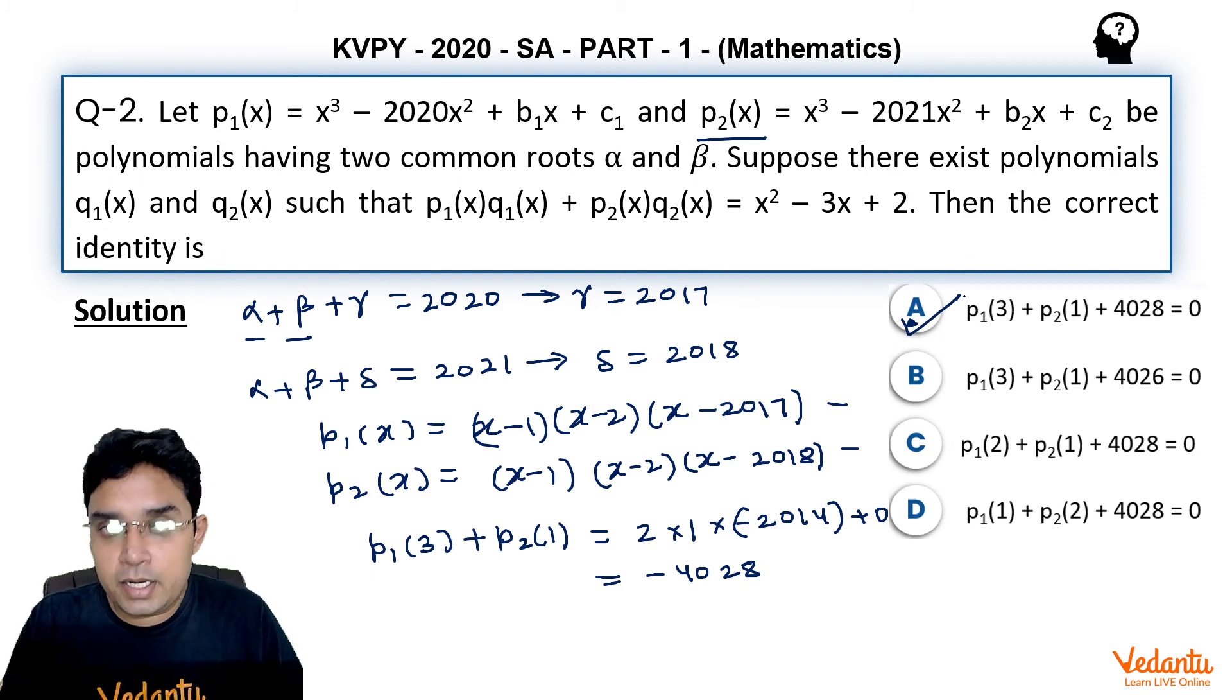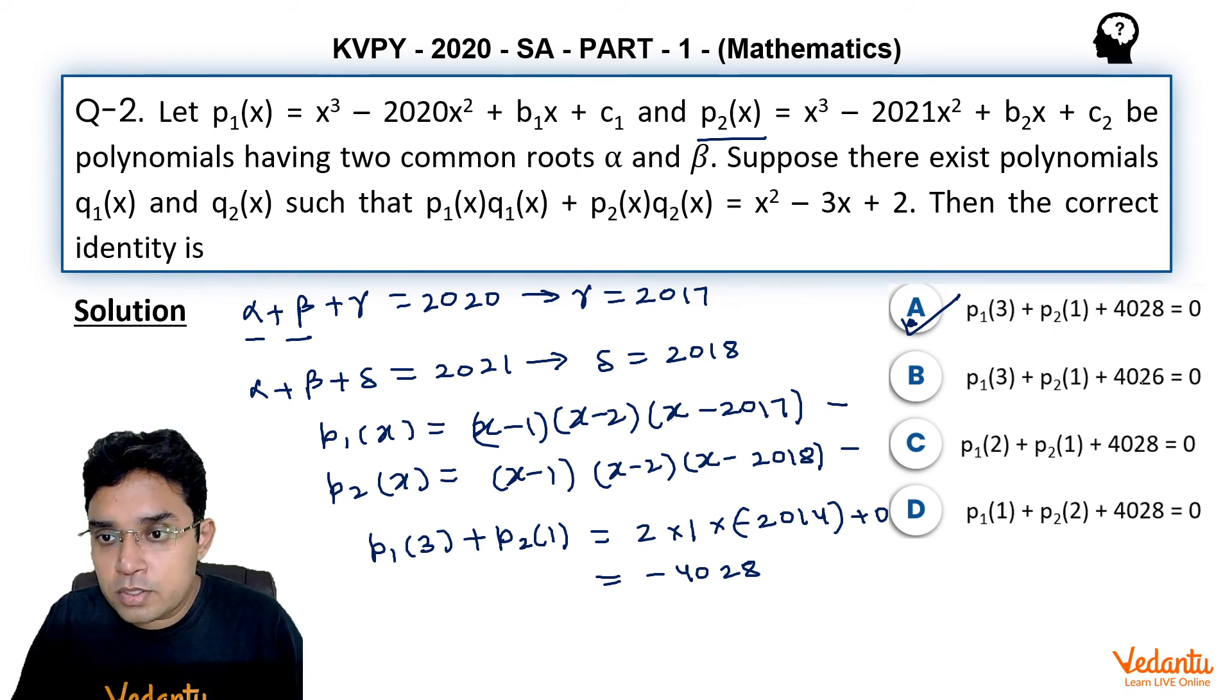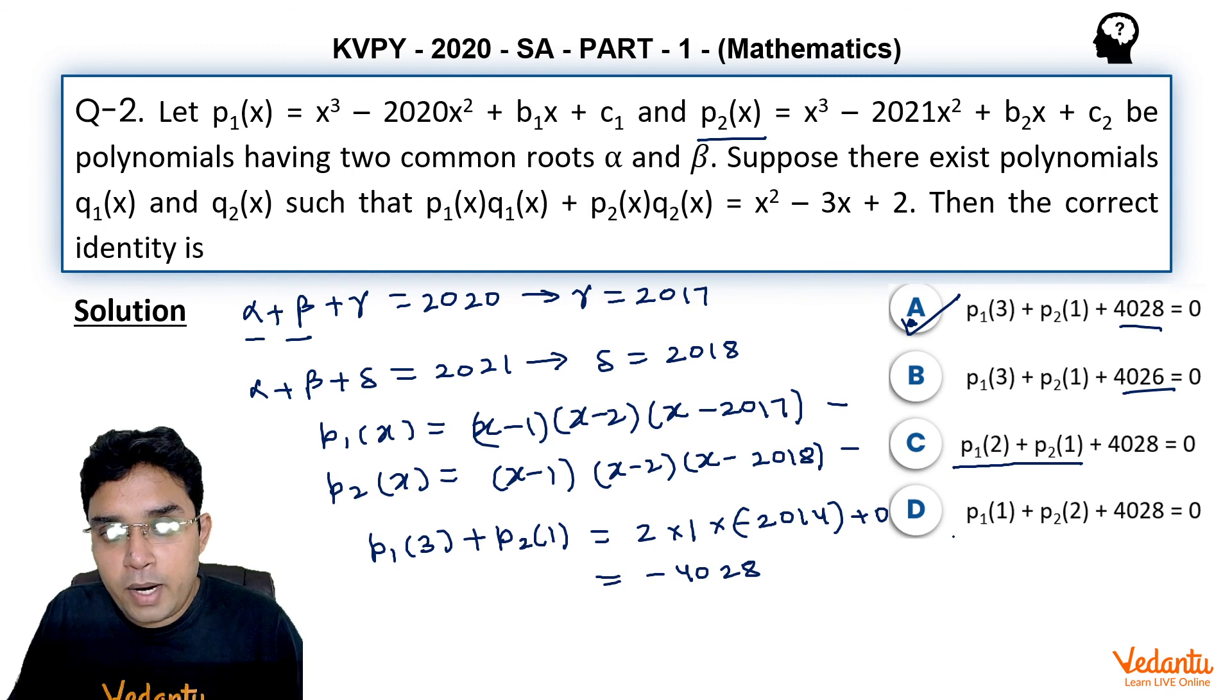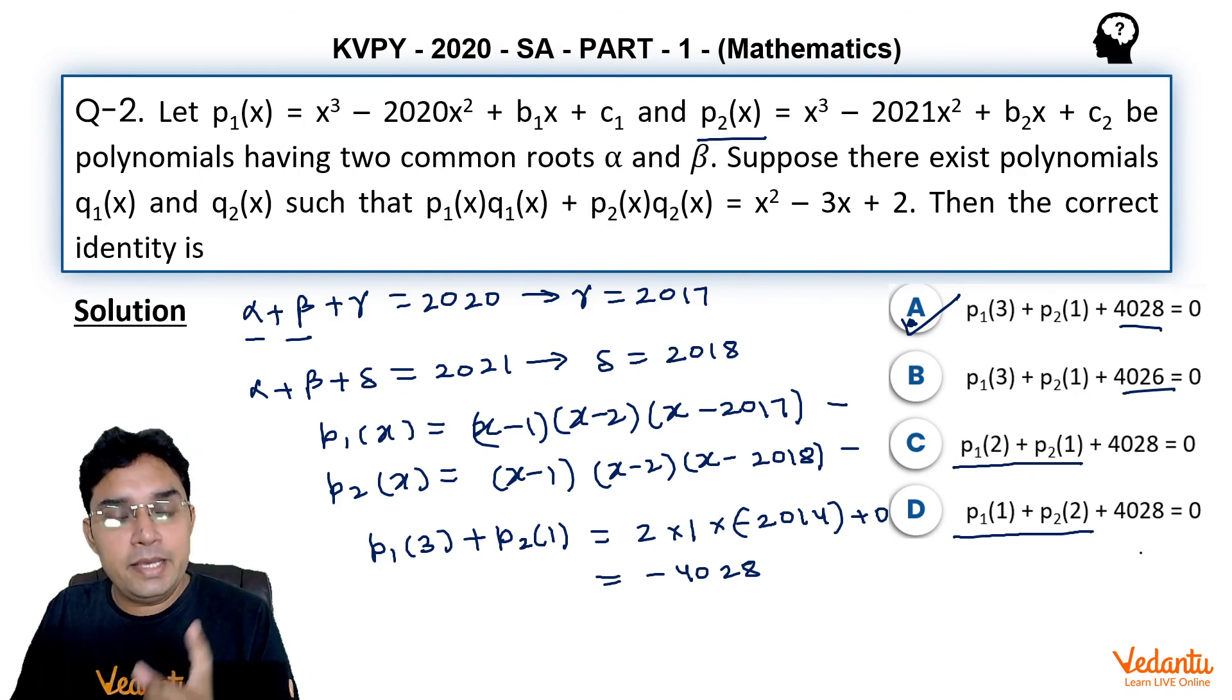As they are all single correct questions, so A should be the answer, but still we can check for B, C, D parts also. I think B is obviously wrong because they have only changed 4028 to 4026. Now C part will give p₁(2) as 0 because 2 is the root. Similarly, p₂(1) will also be 0, so C cannot be correct. Similarly for D part, this will also give p₁(1) as 0 and p₂(2) as 0. So this can also not be correct. So only correct answer is A.